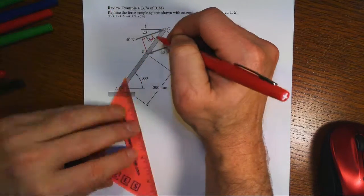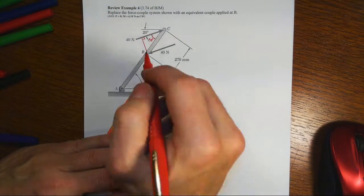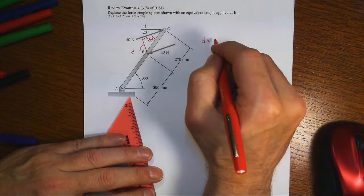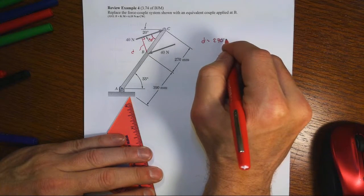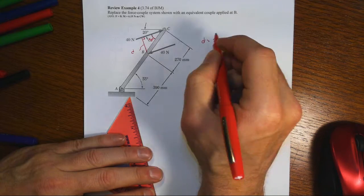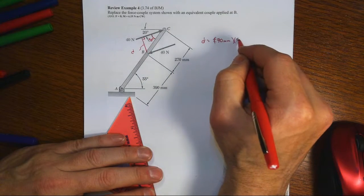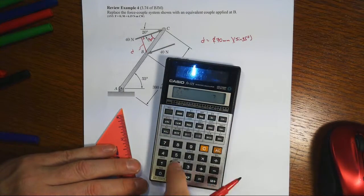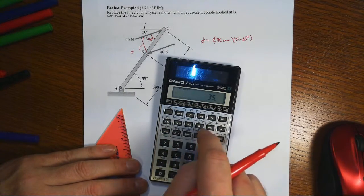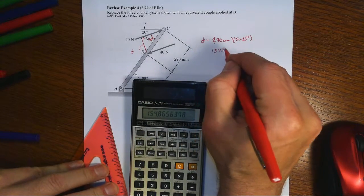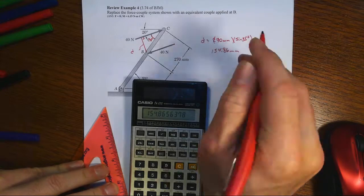We need that little right triangle there to give us our distance D. D then would equal 270 millimeters times sine of 35 degrees, since we're opposite of the 35, which equals 154.86 millimeters.